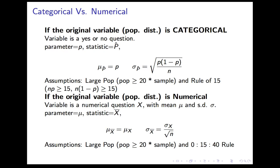Here's the process. First, ask yourself what the sample is made up of — it's usually easy to tell. Once you know what individuals are, you know roughly what the population is. More importantly, once you think about each individual, ask yourself: if I did this study, what data would I have to gather about each individual? What piece of information would I write down next to each individual's name? If it's a yes or no question — categorical. If it's a number — numerical.